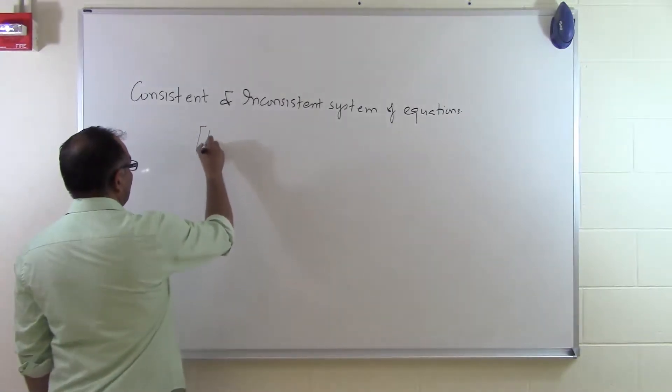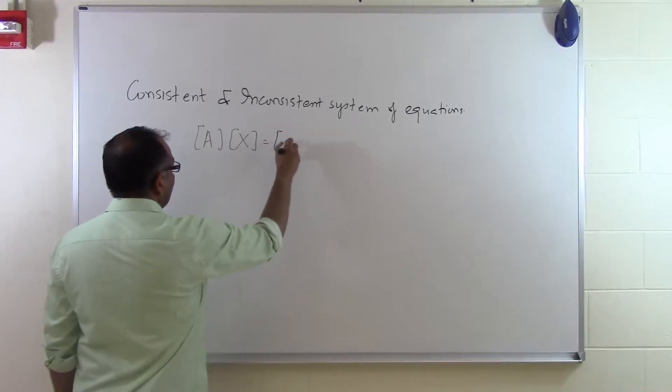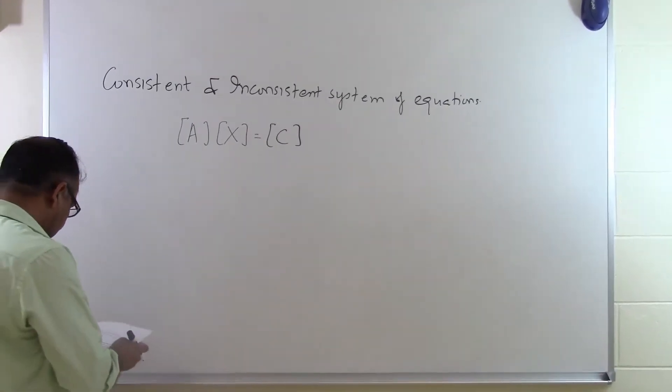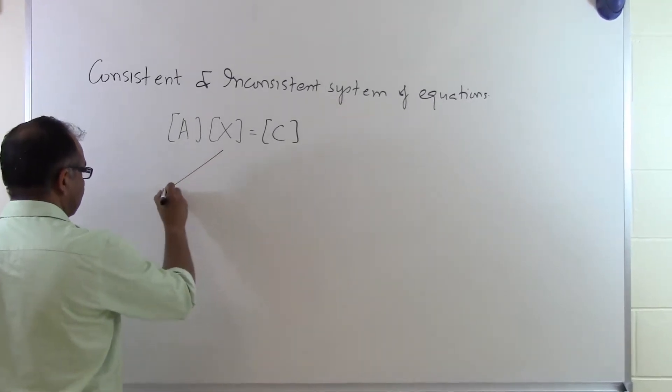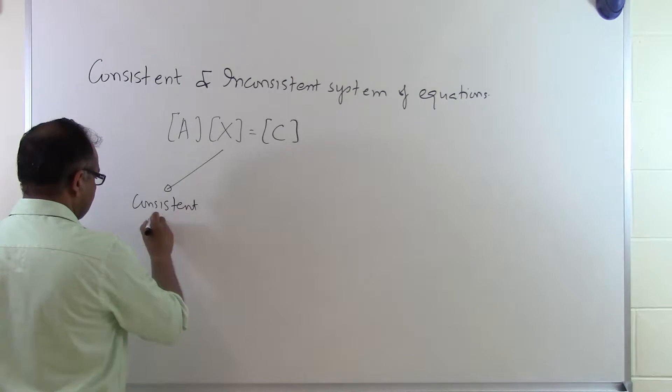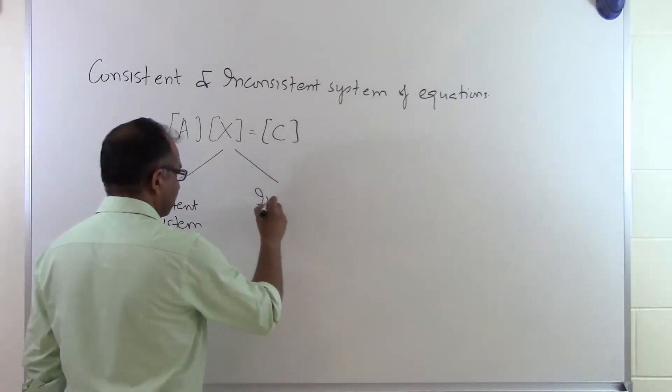So if somebody gives you, let's suppose, a set of equations, N equations and unknowns, and says go ahead and solve it. Now the possibility in this case is that either this is a consistent system or it is an inconsistent system.